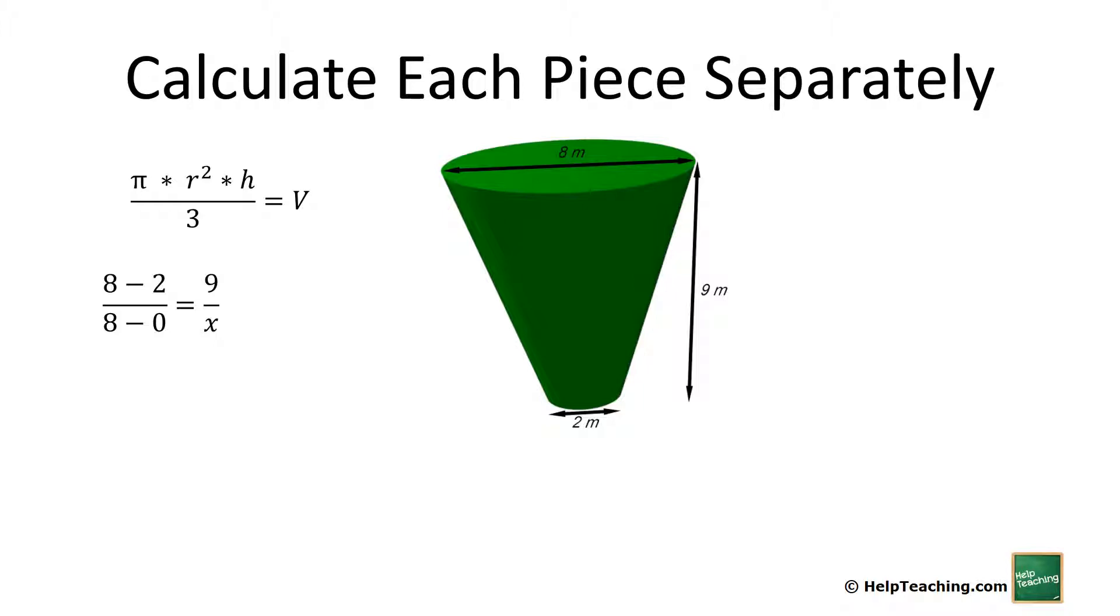8 minus 2, so that's the difference in the diameter from the largest end to the opening. It's 8 and then it shrinks to 2, so that difference happens in 9 meters.